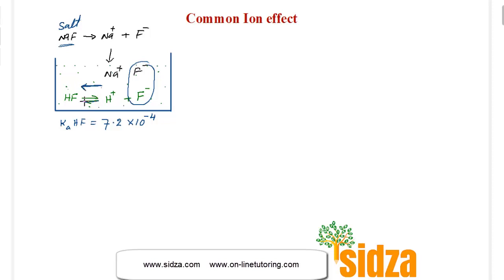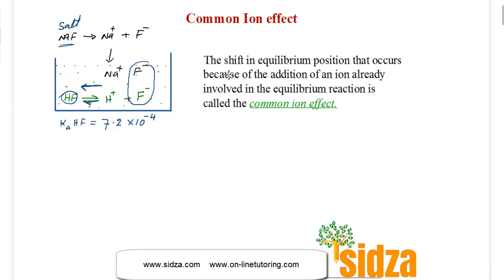The backward reaction becomes faster to relieve the stress. When the backward reaction is favored, the hydrogen ions and fluoride ions combine to form HF. In other words, the dissociation of HF decreases. This process — adding sodium fluoride, increasing fluoride ion concentration, and ultimately decreasing the dissociation of hydrogen fluoride — is what we call the common ion effect.